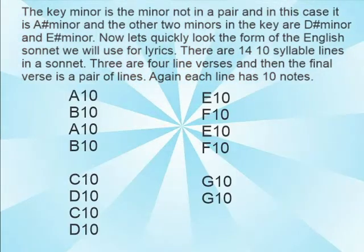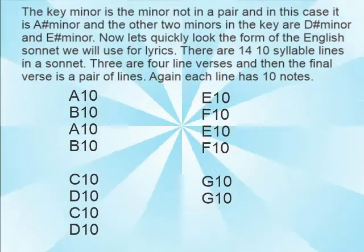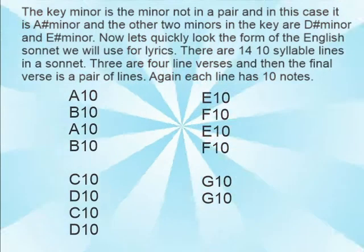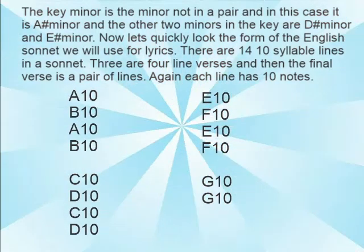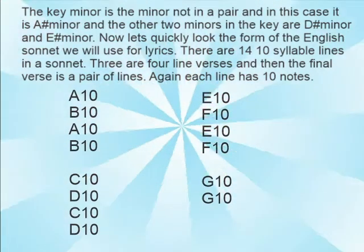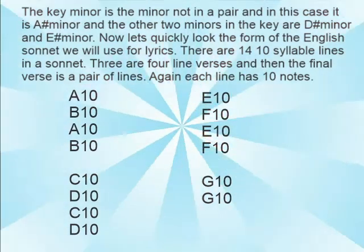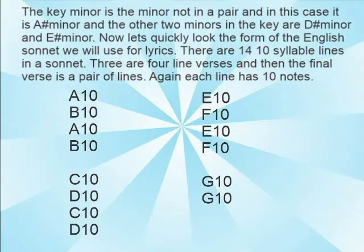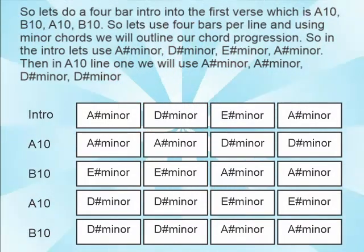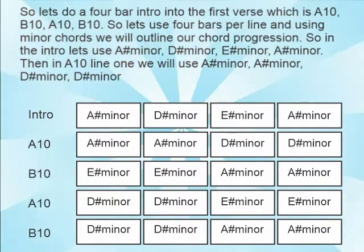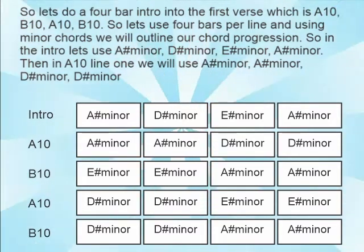Now let's look at the form of the English sonnet we will use for lyrics. There are four ten-syllable lines in the sonnet, three or four-line verses, and the final verse is a pair of lines. Each line has ten notes. So let's do a four-bar intro and the first verse, which is A10, B10, A10, B10, using four bars per line with minor chords to outline our chord progression.